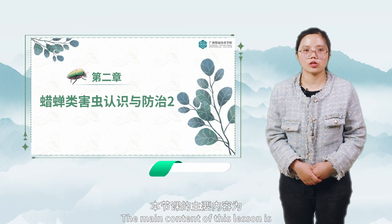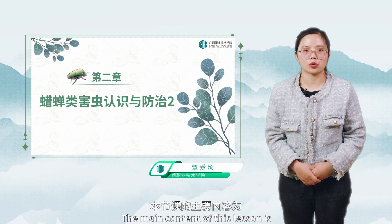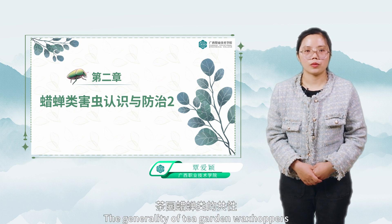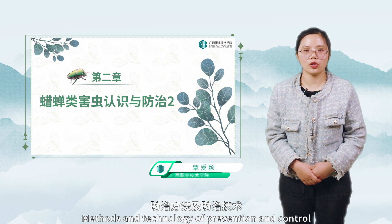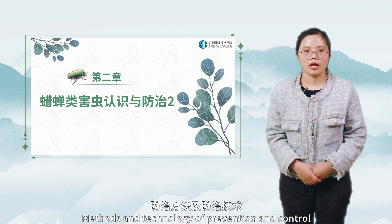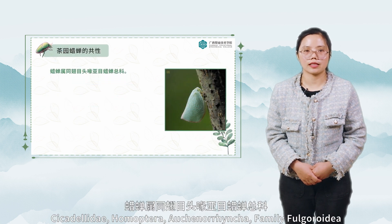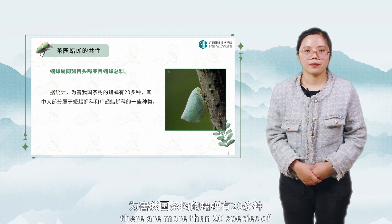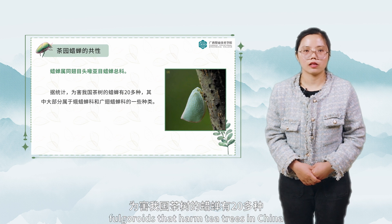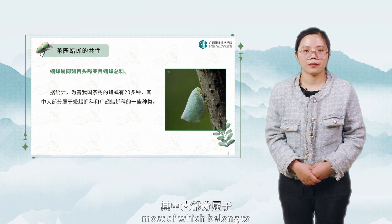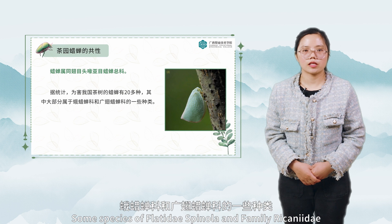Hello everyone. The main content of this lesson is the generality of tea garden waxhoppers, methods, and technology of prevention and control. According to statistics, there are more than 20 species of fulgoroids that harm tea trees in China, most of which belong to some species of Latidae spinola and family Recanidae.